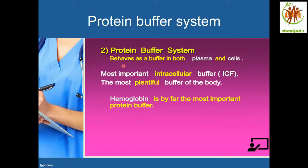Protein buffer system: it behaves as a buffer in both plasma and cells. It is the most important intracellular buffer and the most plentiful buffer in the body. Hemoglobin is the most important protein buffer.